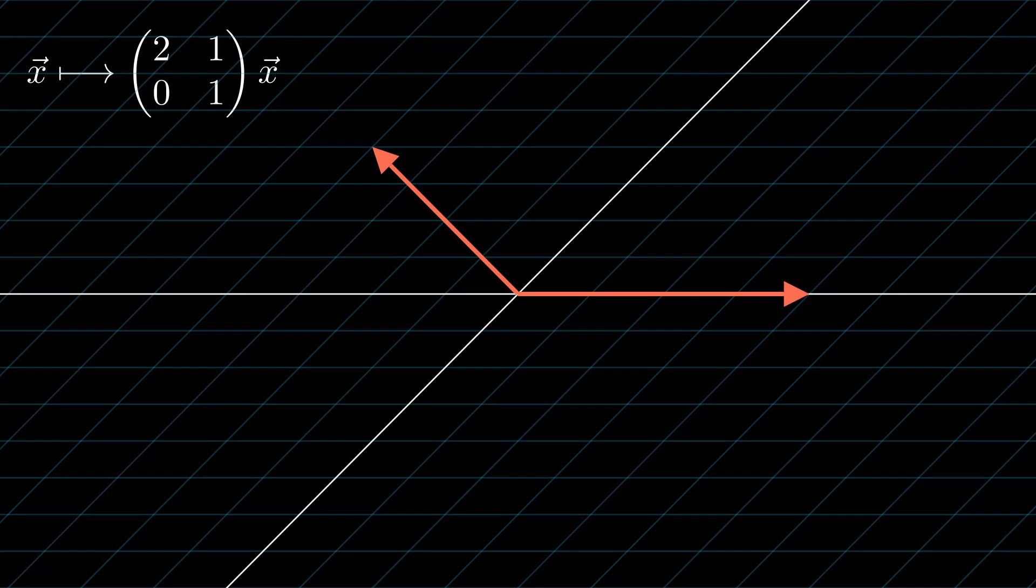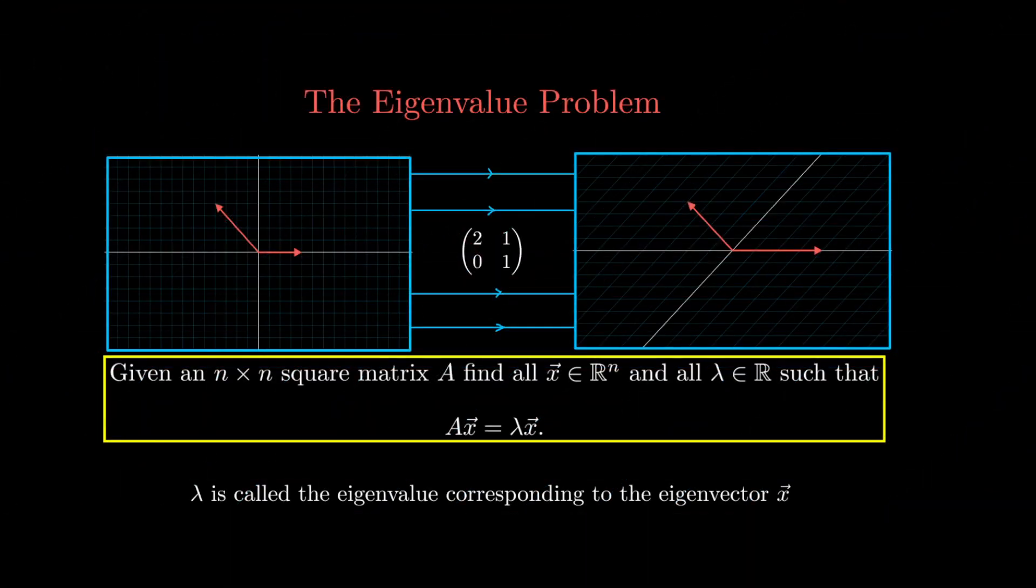Let's phrase this phenomenon more generally. We're interested in solving what's called the eigenvalue problem. So given a square matrix, which is n by n, we're interested in finding for that square matrix A, all n vectors such that when I multiply by that matrix, I just get a scalar multiple of the original vector. So that is that this equation here holds.